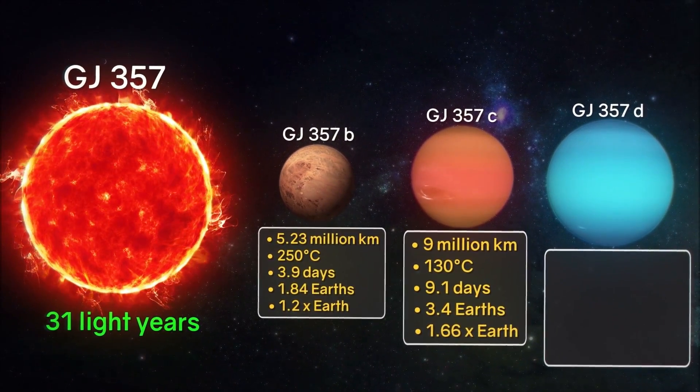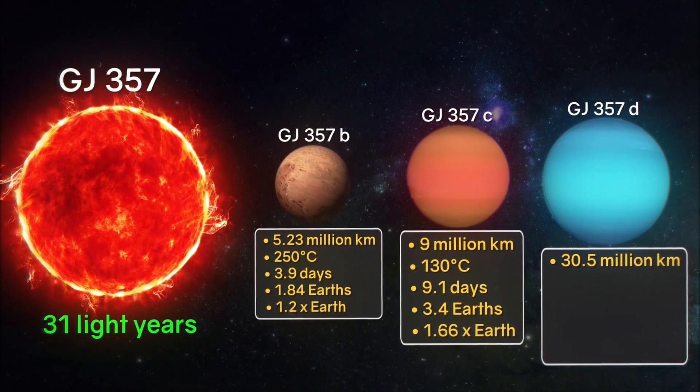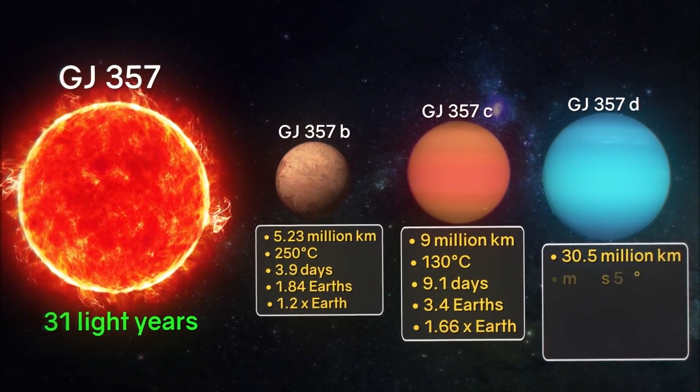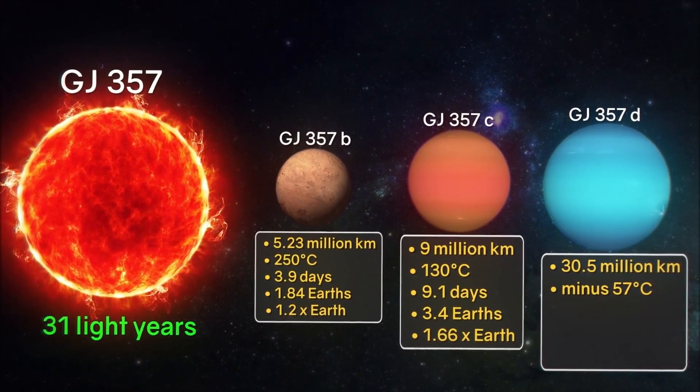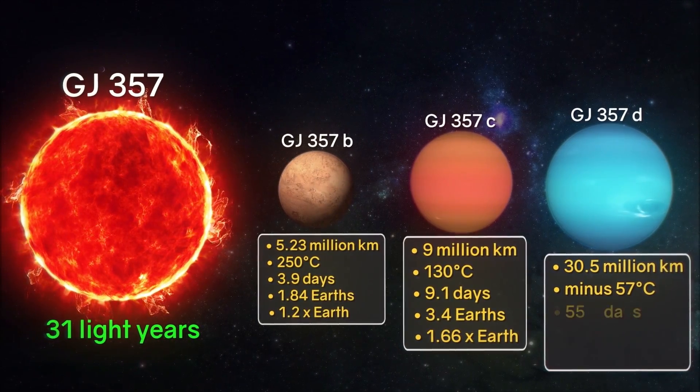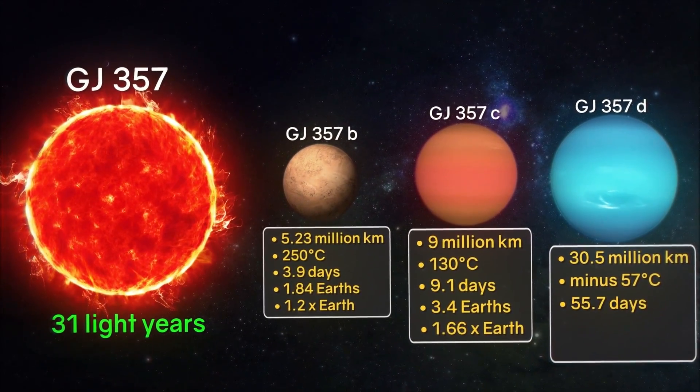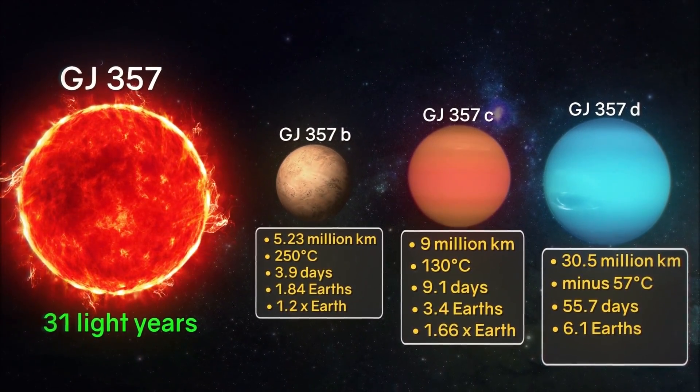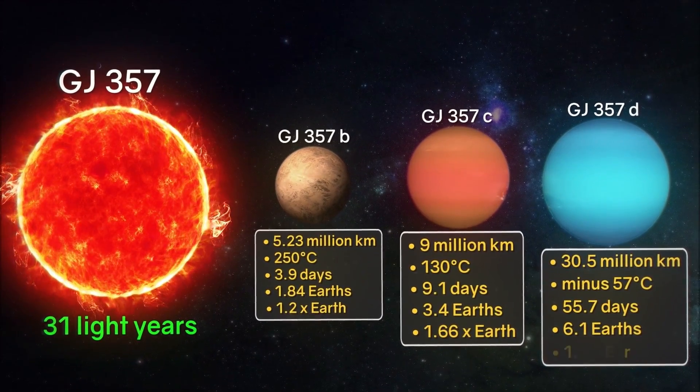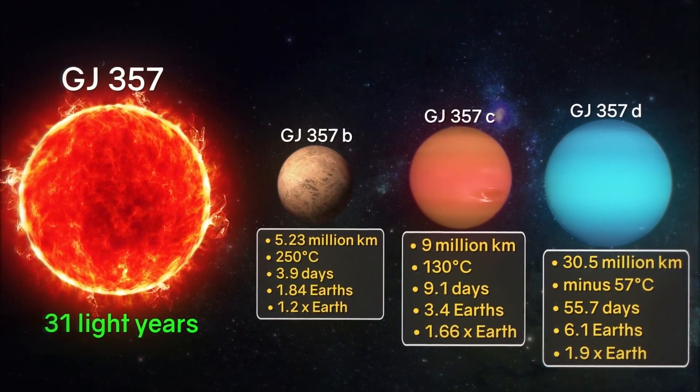GJ357d: The distance to the star is about 30.5 million kilometers. The average surface temperature is minus 57 degrees Celsius. The period of rotation around the star is 55.7 days. The mass is about 6.1 times that of the Earth. Size 1.9 times the size of the Earth.